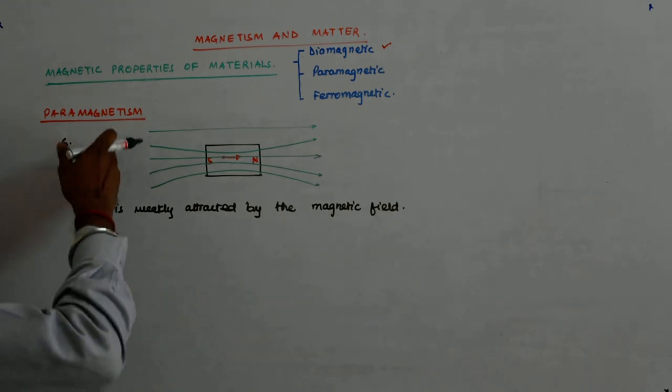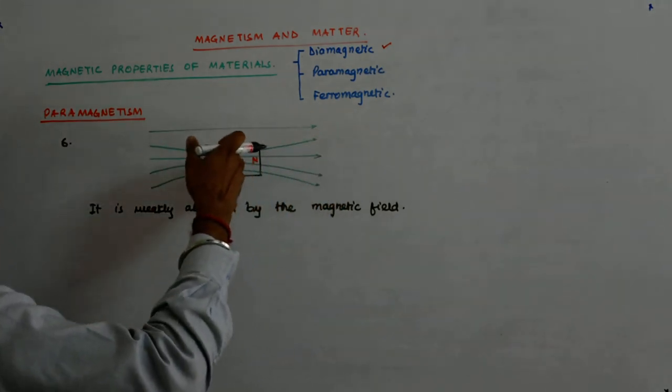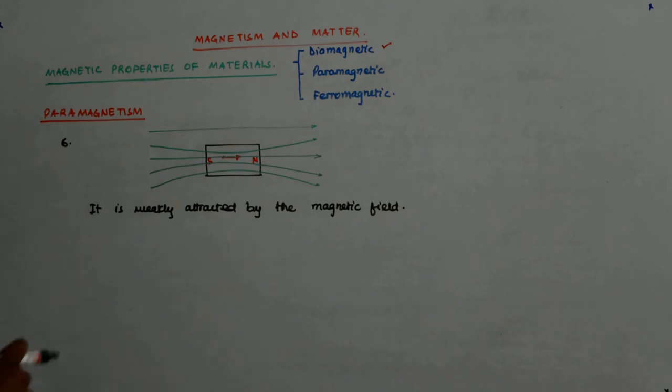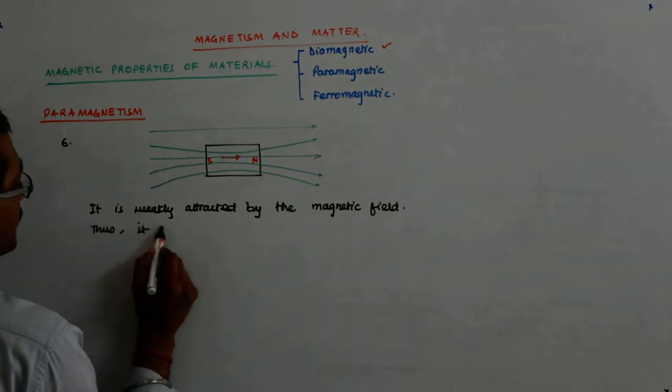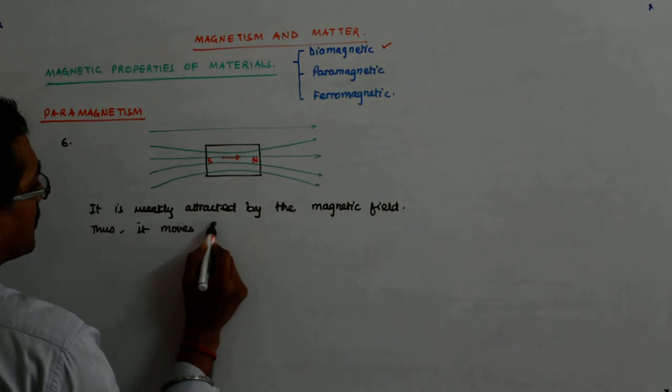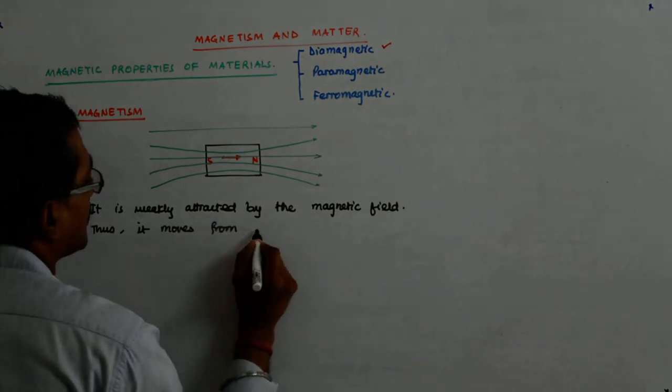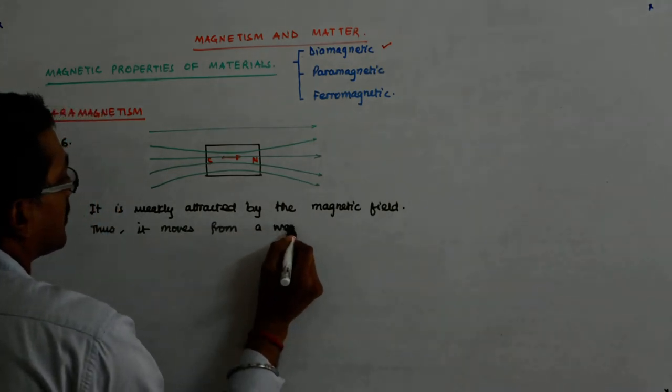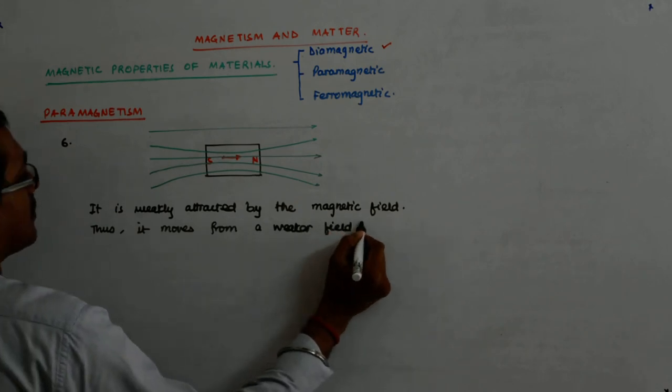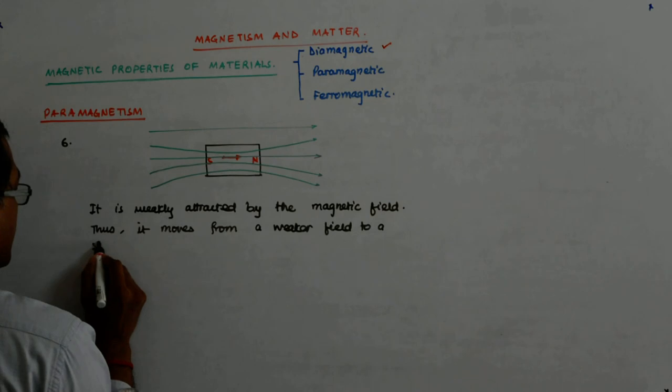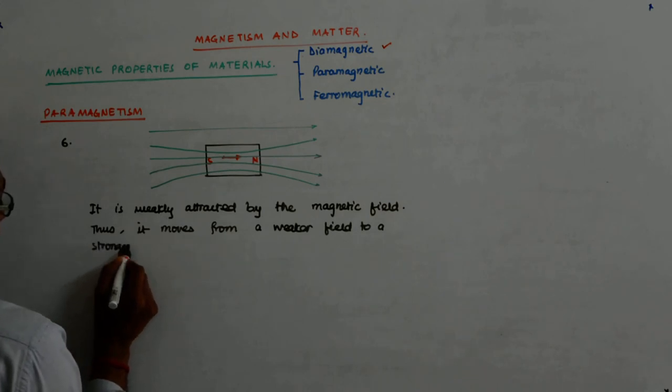So if there is a north pole here and there is a south pole here, it has a tendency to move from a weaker field to a stronger field. It moves towards the pole. So it moves from a weaker field to a stronger field.